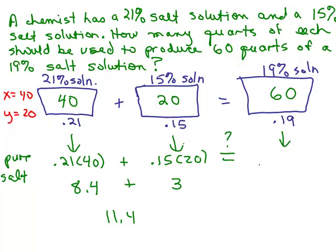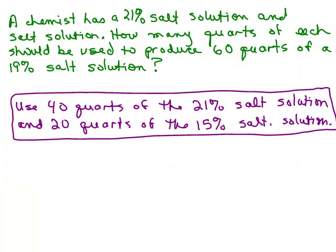Is that the same as the amount of pure salt? If I have a 19% solution, 60 quarts of a 19% solution. And yes, .19 times 60 is also 11.4. So yeah, it does check. So now all we have to do is answer the question. So here's our final answer to this problem. Use 40 quarts of the 21% salt solution and 20 quarts of the 15% salt solution.